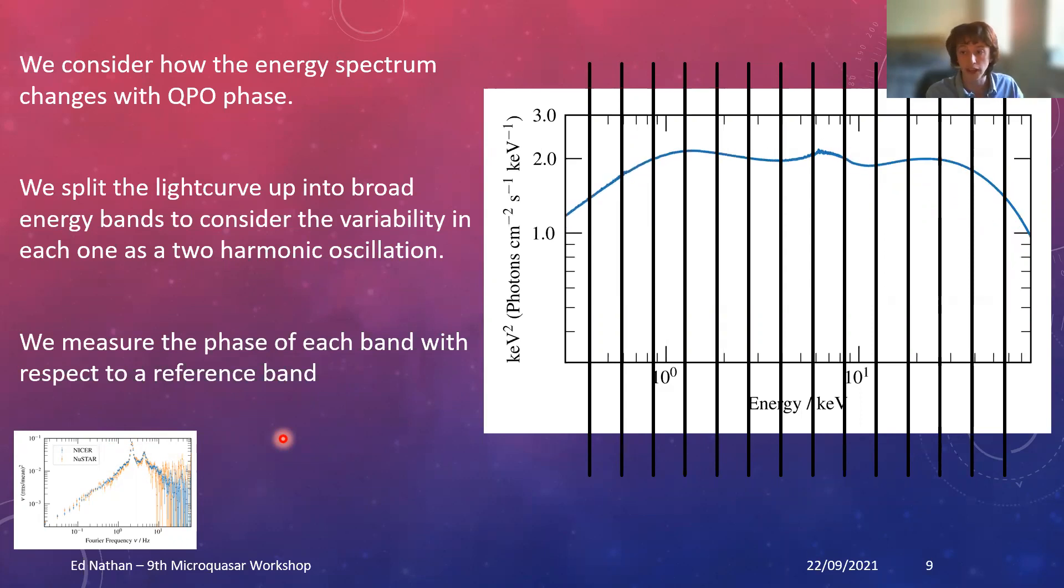If we get the RMS out, we can look at that. The other thing we want to consider is phases. We consider a reference band which is effectively just all the photons, the average spectrum. We see how that is varying with time, and then we can begin to compare the phase of each energy channel with the phase of this overall reference band.